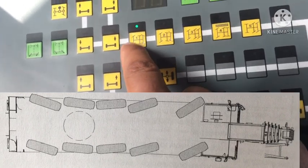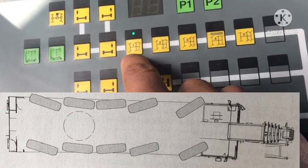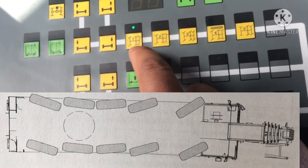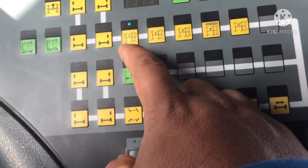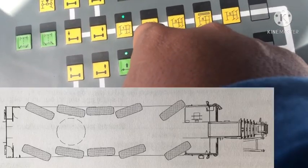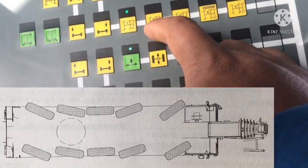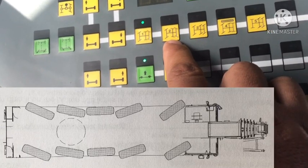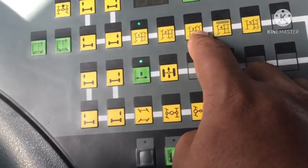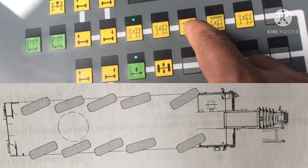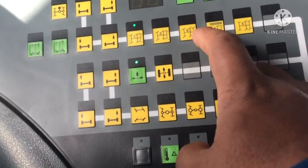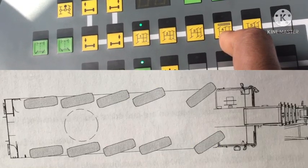This is the steering program. Number one is the steering program for on-road driving — this is the sample for on-road driving. Number two is the steering program for all-wheel steering — all tires steer together. Number three is the steering program for crab work — all wheels steer in the same direction, like this.